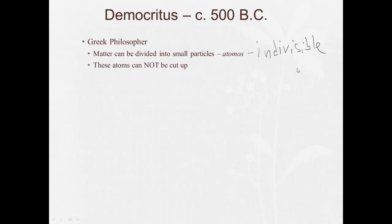The first person we're going to talk about was this ancient Greek philosopher called Democritus, who lived about 500 B.C., and he said that matter can be divided into small particles, atomos, and that actually would be for indivisible, something that cannot be divided. And what he hypothesized was that the atoms could not be cut up.